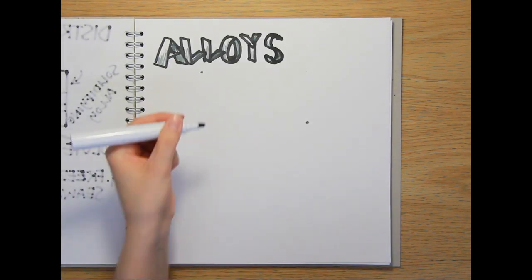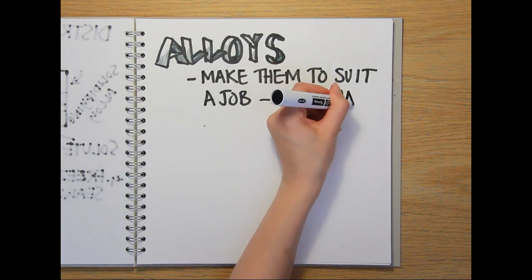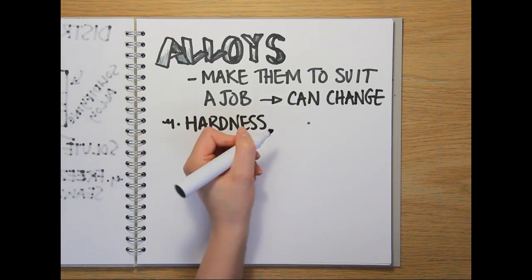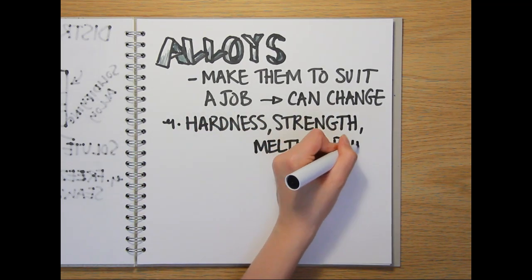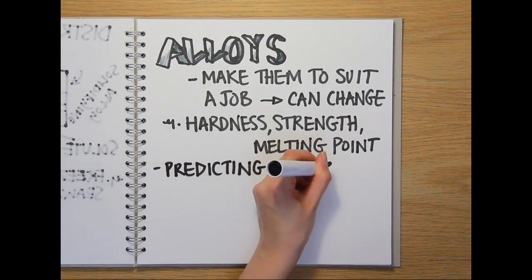So, we make alloys to change the properties of metals to suit the jobs we need them for. We can change the way the crystal lattices of alloys behave to alter hardness, strength and melting point.